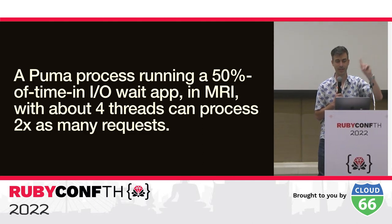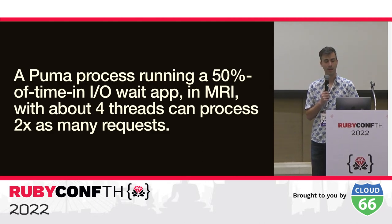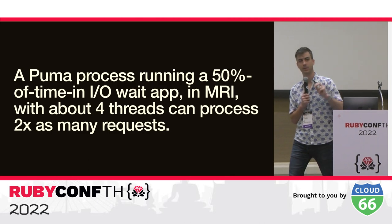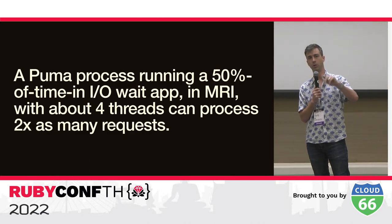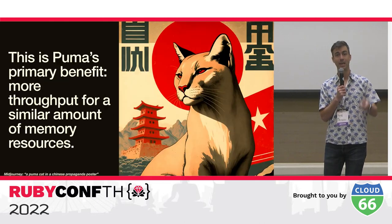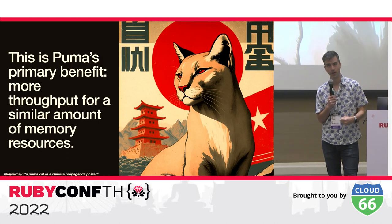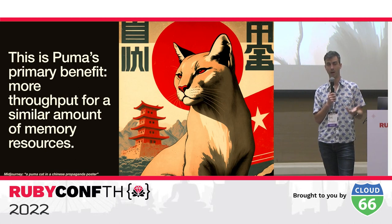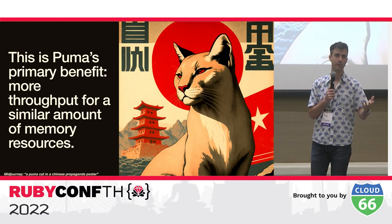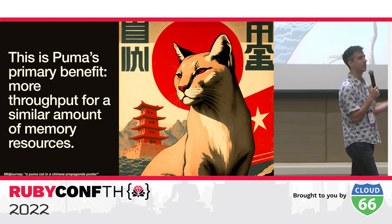Even with the GVL, a Puma process running an application that waits on I/O for about 50% of its total time — in MRI with four threads — can process two times as many requests as a server with one thread. Two Unicorn processes can process the same requests per second as one Puma process. This is Puma's primary benefit: more throughput for the same memory resources. If this doesn't matter to you, don't switch to Puma.